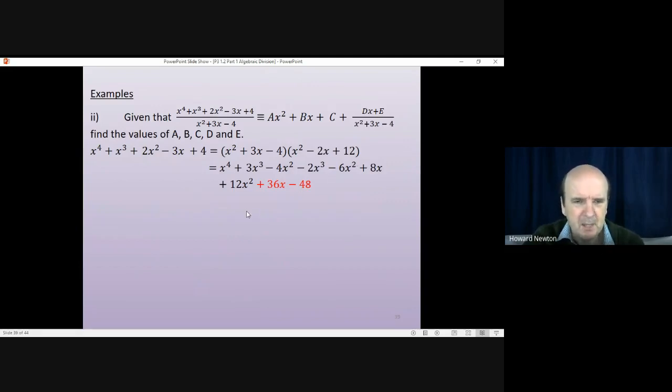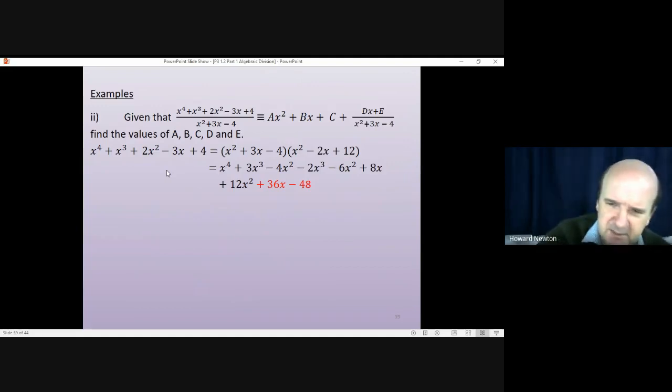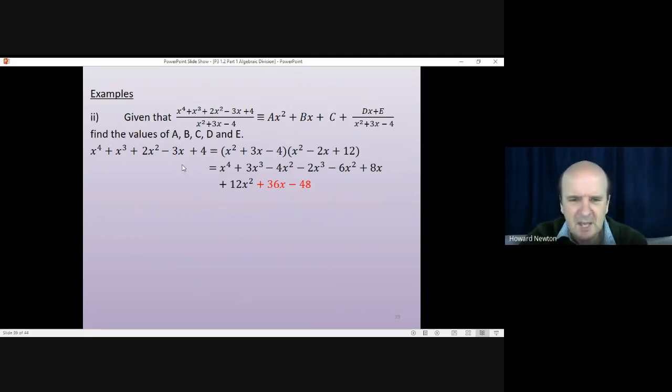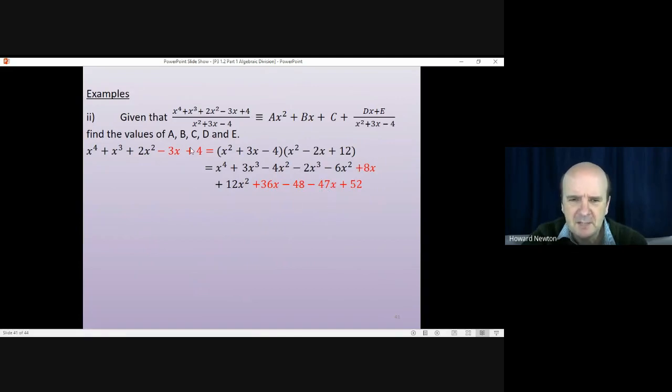Now we've reached the end of the brackets. The x to the 4s are sorted. The x cubes, they're sorted. The x squareds are sorted. If we got exactly what we wanted here, it would be because this was a perfect factor. Now what we've got is not exactly what we wanted. So we don't have a perfect factor. We need to be a little bit careful. So looking at the x's, we want minus 3x. We've got plus 36 plus another 8. So we've got plus 44x. Looking at the numbers, we've got plus 4, or we want plus 4, and we've got minus 48. So 44x needs to be adjusted, and the minus 48 needs to be adjusted. Well, 44 take away 47. That'll give me the minus 3 that I want. Minus 48 plus 52. That'll give me the plus 4 that I want. And those last two things that we did, that is the remainder.